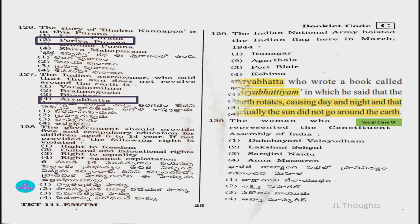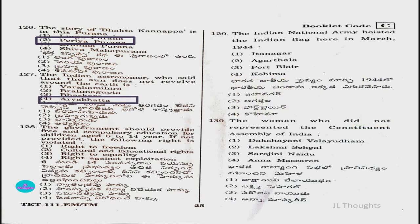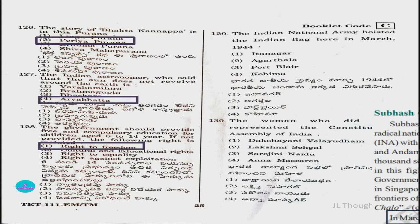Question number 128: The government should provide free and compulsory education for children aged 6 to 14 years. If not provided, the following right is violated — option 1: right to freedom; option 2: cultural and educational rights; option 3: right to equality; option 4: right against exploitation. The answer is option one, right to freedom.